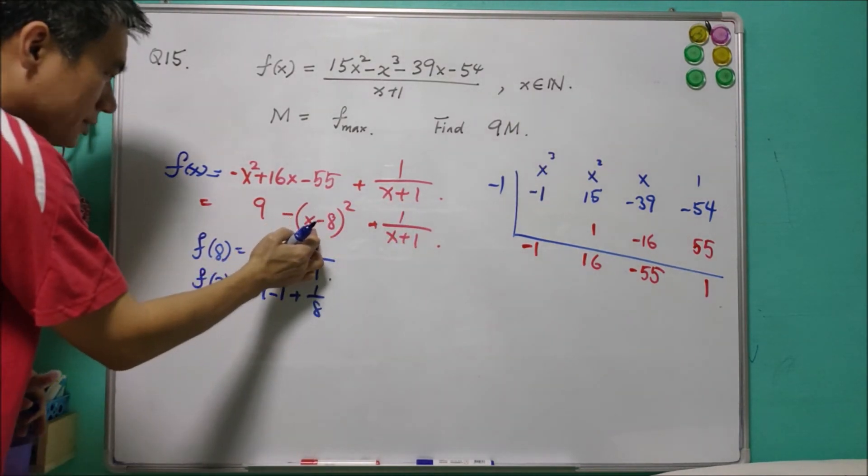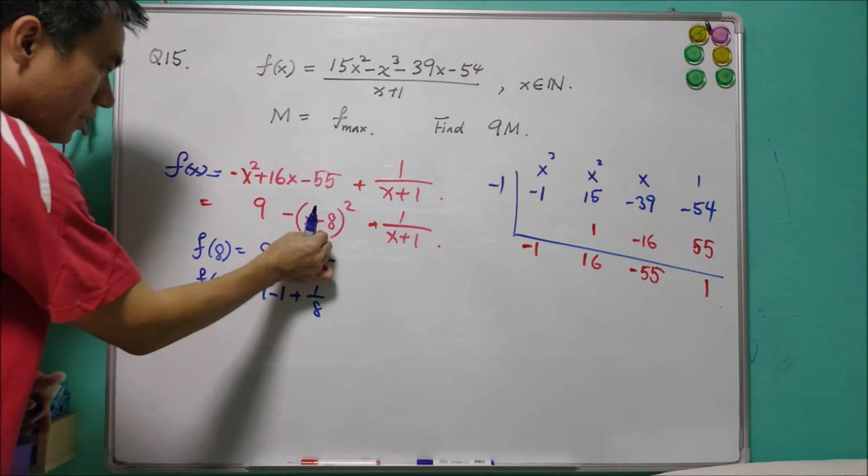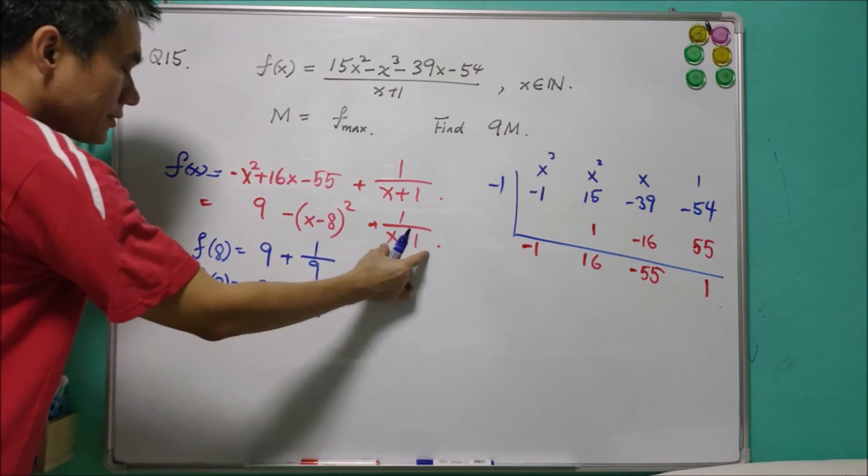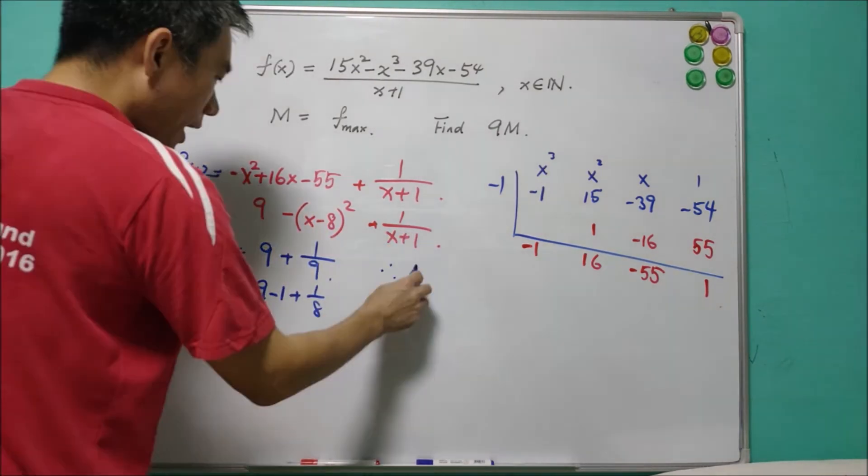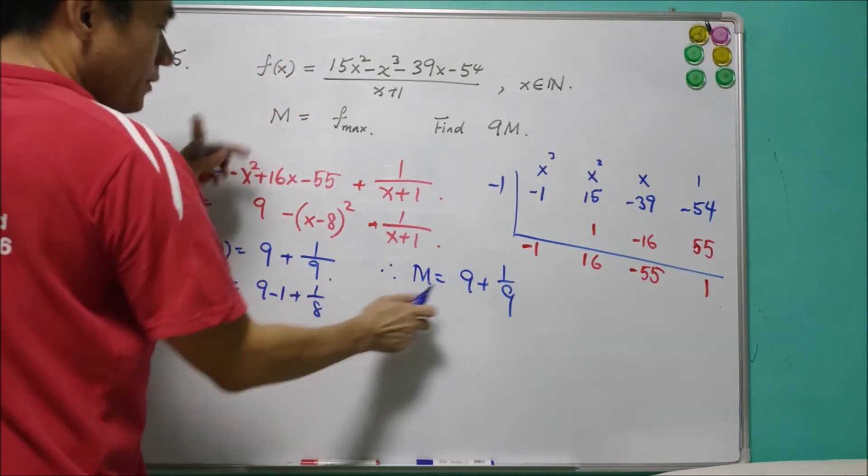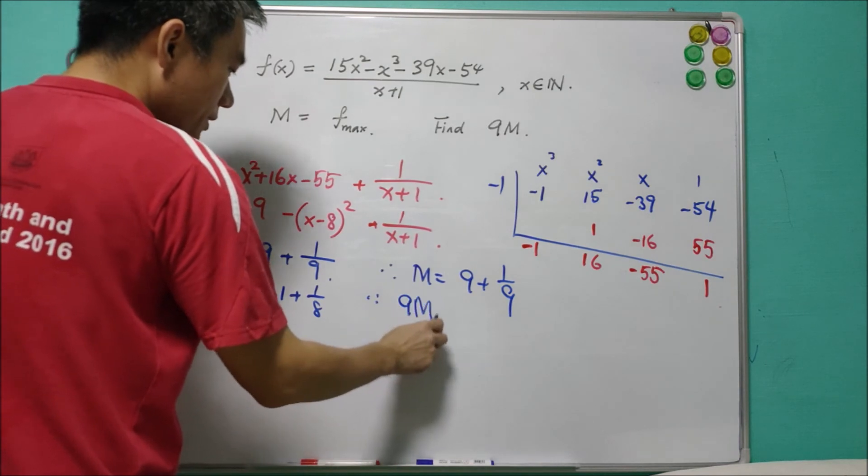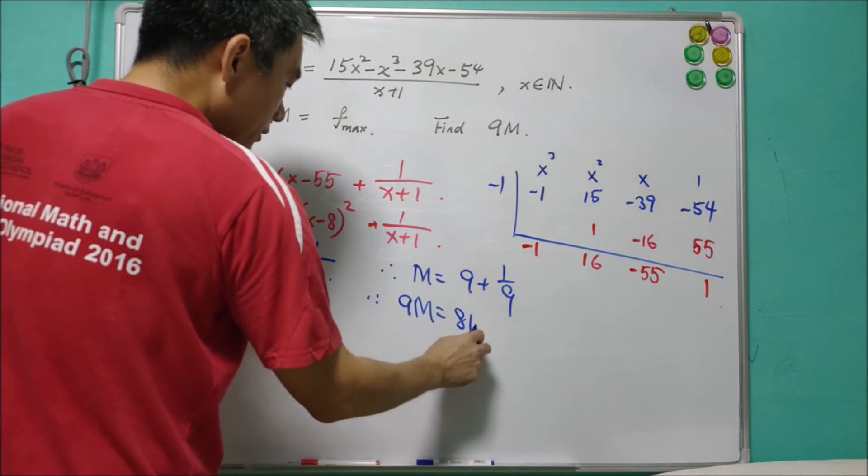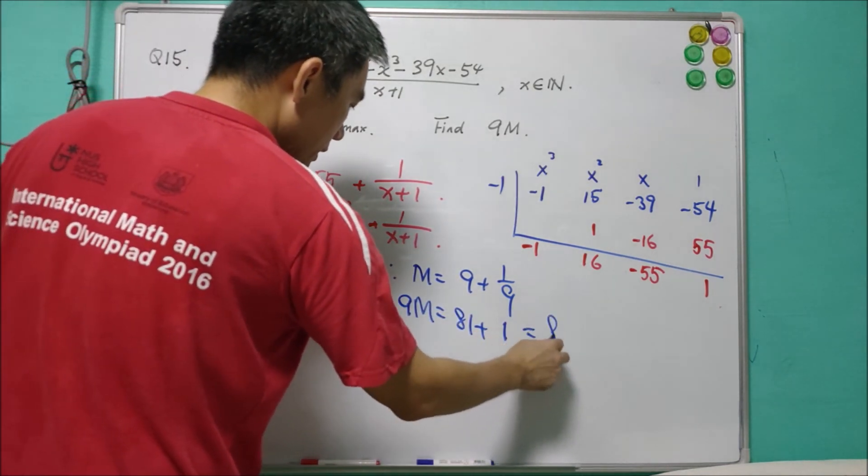You can try for some other x. This will decrease a lot, but this increases less than 1. And therefore, m is equal to 9 plus 1 over 9. This is the maximum. And therefore, 9m equals 81 plus 1. That is 82.